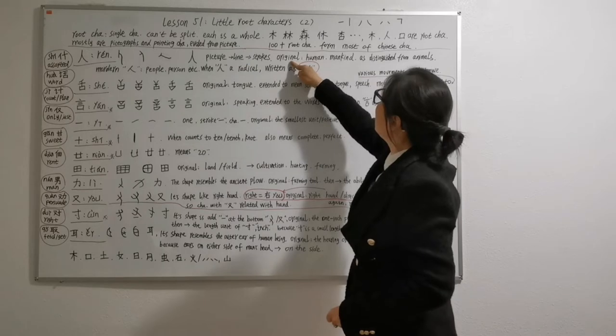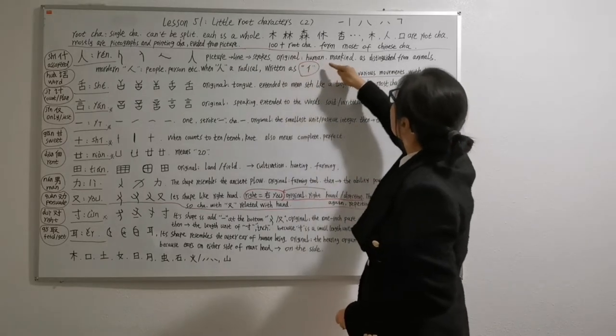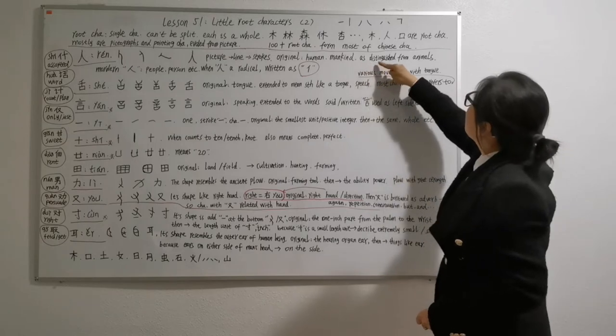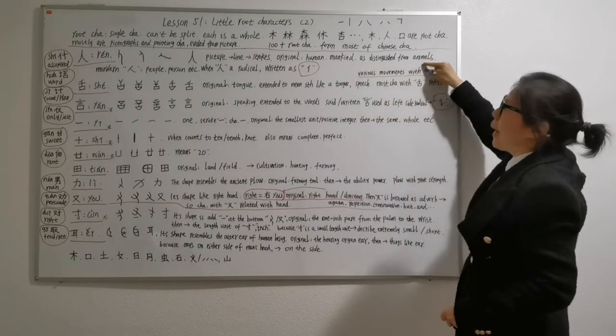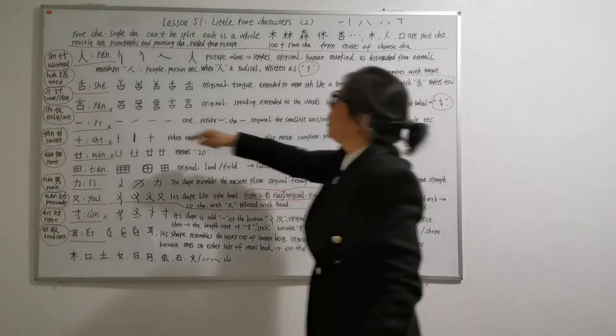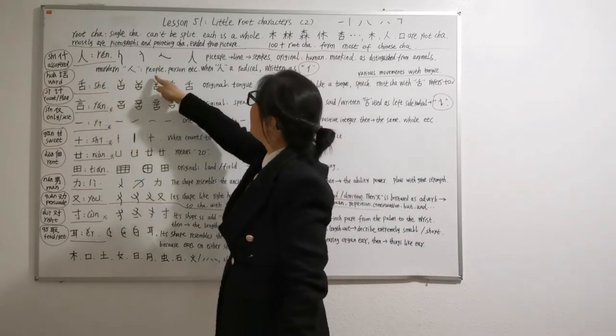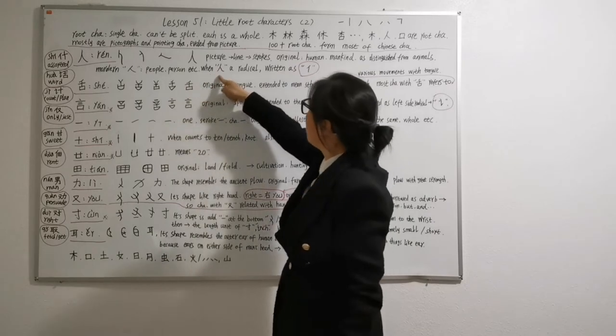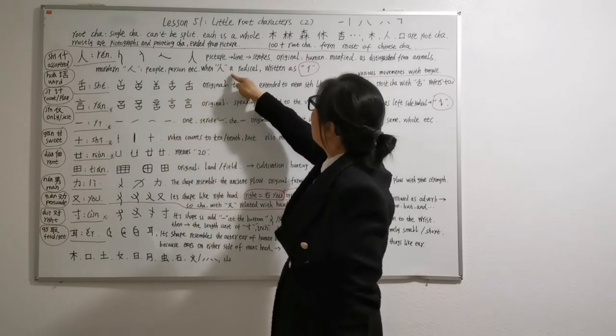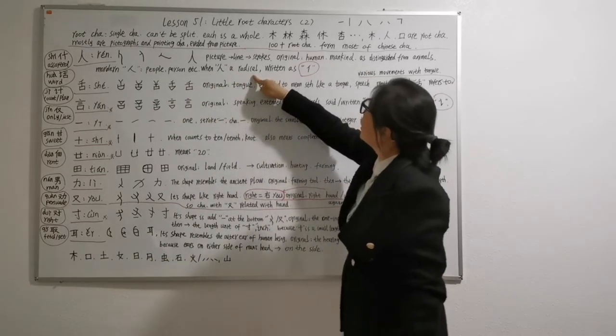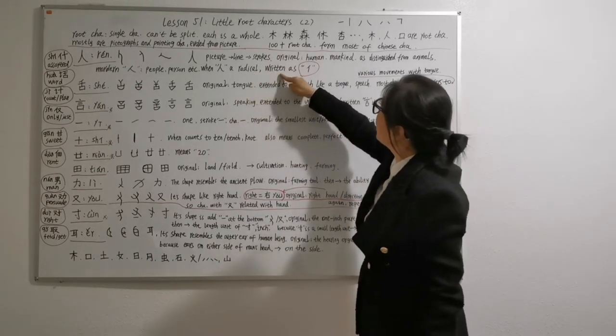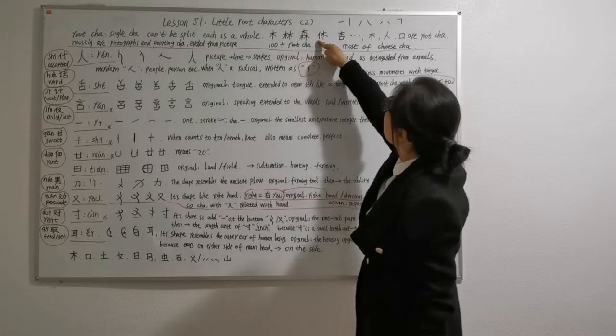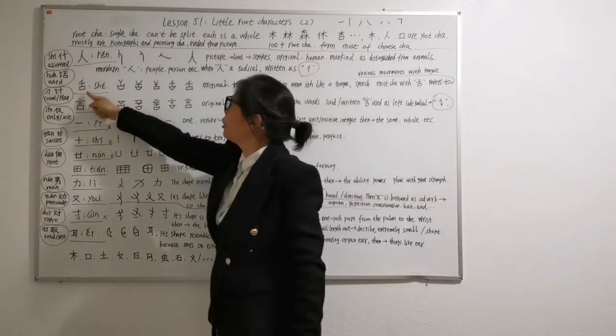Two strokes. Almost all of the Chinese characters, they evolved from picture to length. Finally, to strokes. Ren, originally mean human, mankind. It's distinguished from animals. Modern Ren means person, people, etc. Ren as a radical, it is written as this, like this, shoe, second, this one.